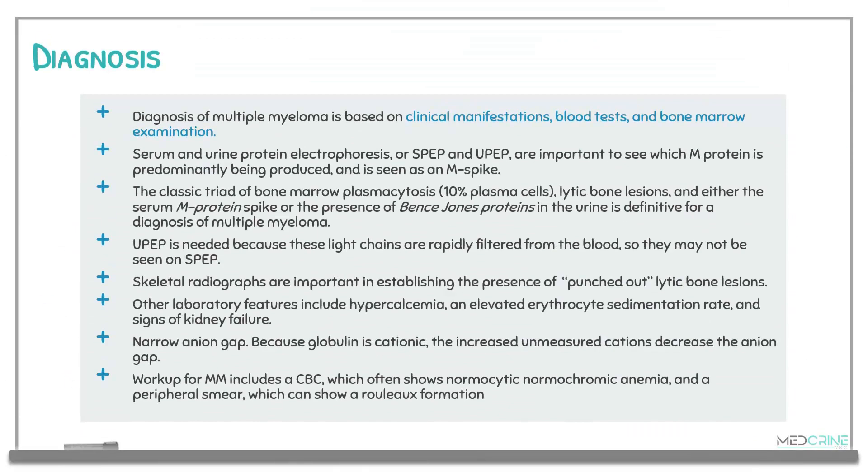The diagnosis of multiple myeloma is based on the clinical presentation, blood tests, and bone marrow examination. Serum and urine protein electrophoresis are performed to identify the predominant M protein; in multiple myeloma, an M-spike protein is typically seen. The classic diagnostic triad is: bone marrow plasmacytosis with more than 10% plasma cells, lytic bone lesions, and either a serum M protein spike or the presence of Bence Jones proteins in the urine.